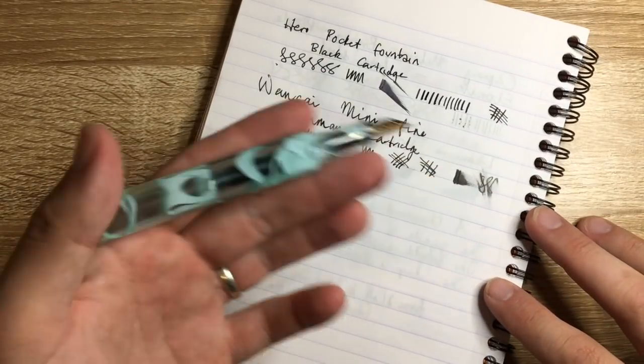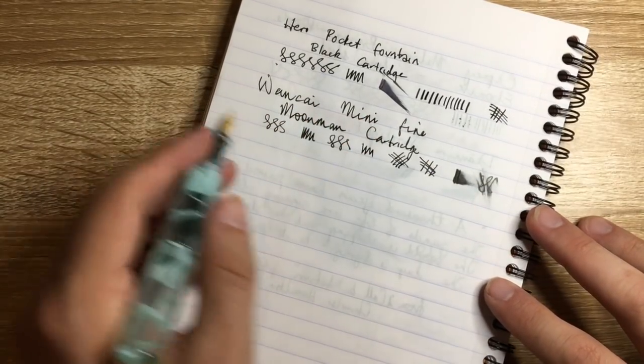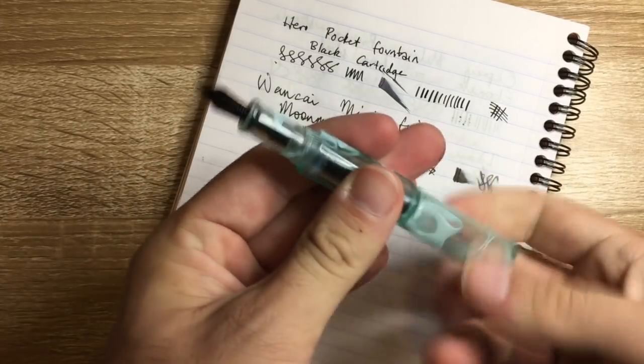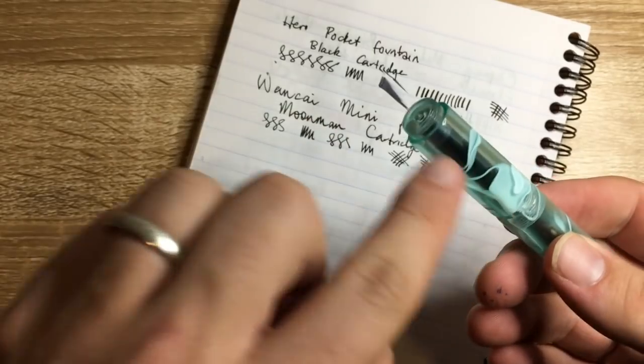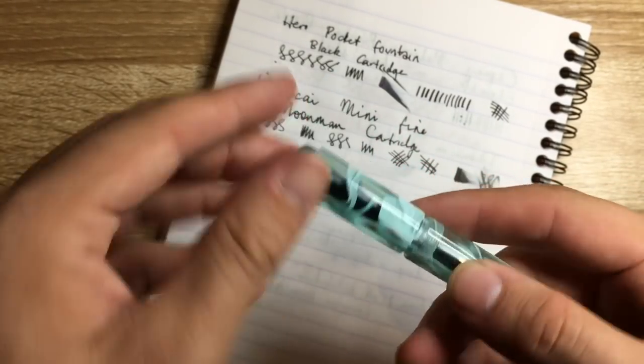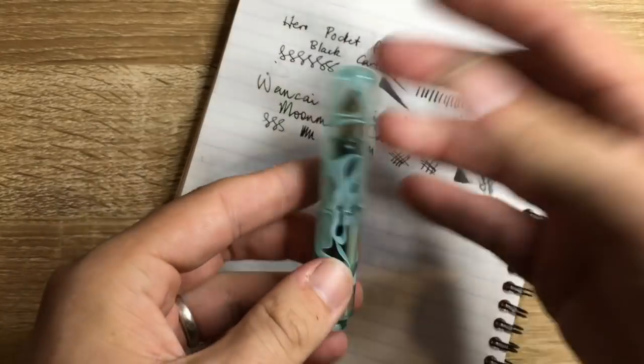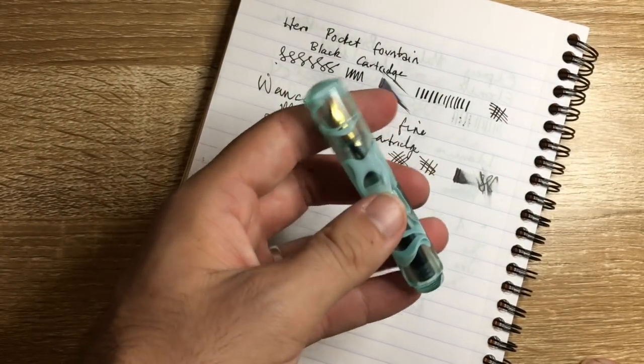None of these are going to be pens you're going to be writing with for long writing sessions. But for taking a few notes here and there, this is a really lovely pen. And the fact you can eyedropper it, fill that whole part of the barrel there with ink, means that you're going to have a decent amount of ink on you. And it's a pretty sturdy pen. So you don't have to worry about it leaking or anything like that.